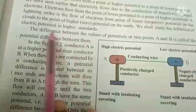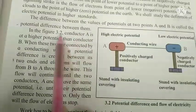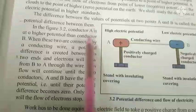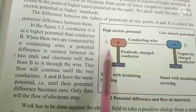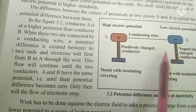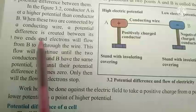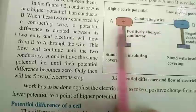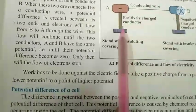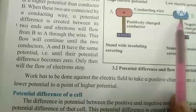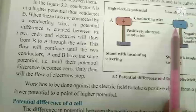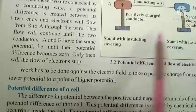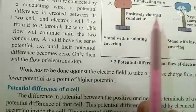We shall study the definition of electric potential in higher standard only. The difference between the values of the potentials of two points A and B is called the potential difference between them. When conductors A and B are connected by a conducting wire, a potential difference is created between its two ends and electrons will flow from B to A through the wire. This flow continues until both conductors reach the same potential — that is, until the potential difference becomes zero.